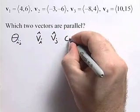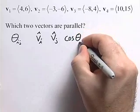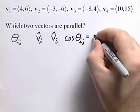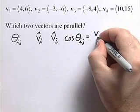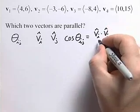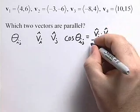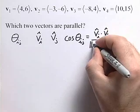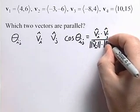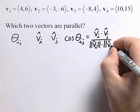Then we'll have the cosine of theta ij is equal to the dot product of vector i and vector j divided by the magnitude of vector i times the magnitude of vector j.